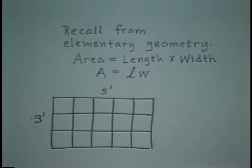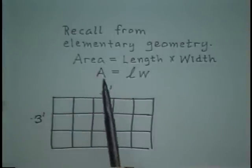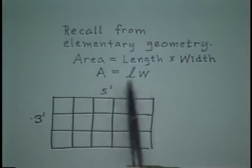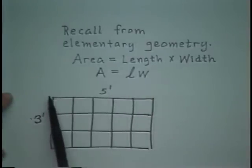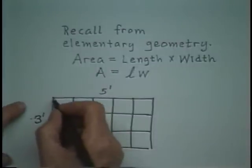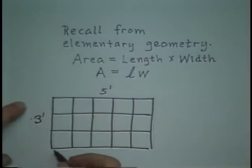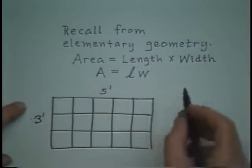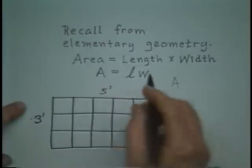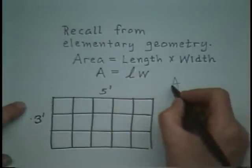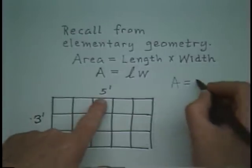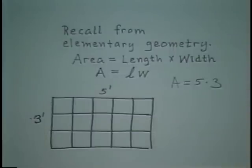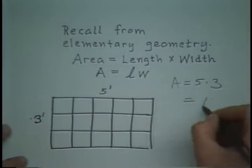Before discussing the multiplication of fractions, let's recall a fact from whole numbers. You might recall from elementary school geometry that if you have the length and width of a rectangle, let's say the width is 3 feet and the length is 5 feet, that the area is found by multiplying the length times the width. So area in this case would be 5 times 3, which is 15.